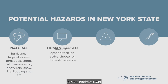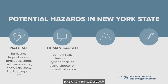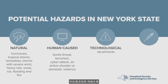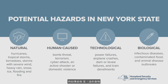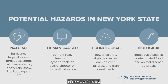Human-caused hazards such as a bomb threat, terrorism, cyber attack, an active shooter, or domestic violence. There are also technological hazards such as power failures, airplane crashes, dam or levy failures, and train derailments. Finally, there are biological hazards such as infectious diseases, contaminated food, and animal disease outbreaks.